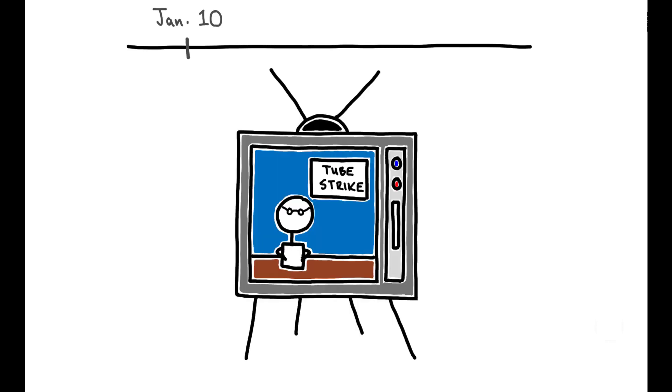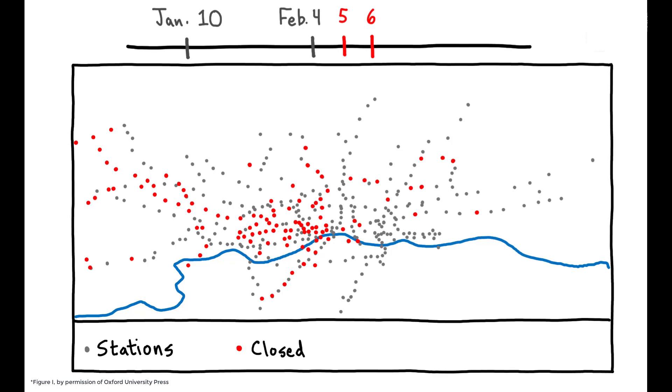On January 10, 2014, Union members announced a 48-hour strike of London tube workers to begin at 9 p.m. on February 4th. This led to major disruptions throughout the network on February 5th and 6th, with 171 stations closed for at least part of the duration of the strike.